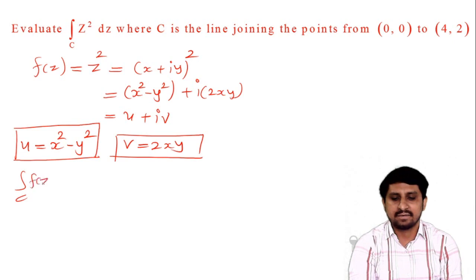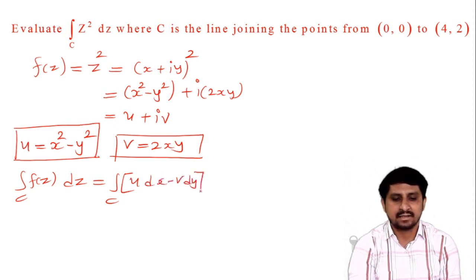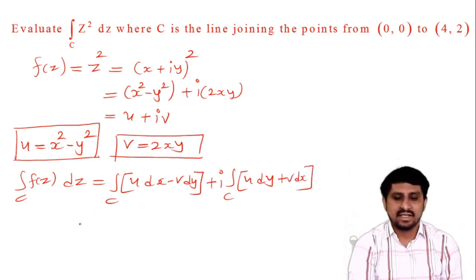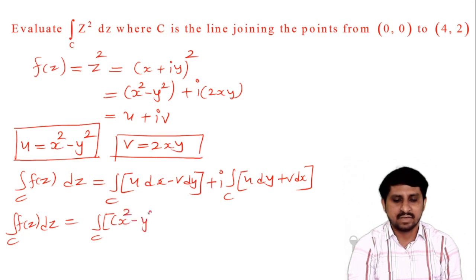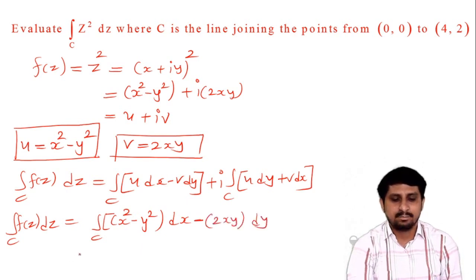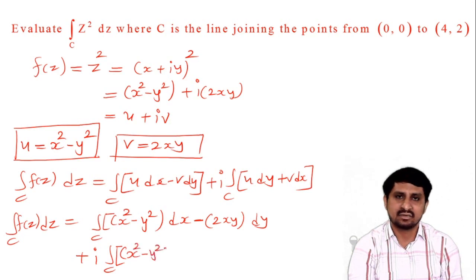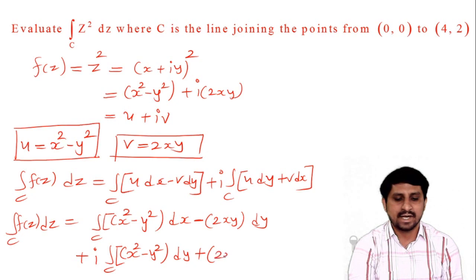Our main formula is: integration f(z) dz equals integration (u dx minus v dy) plus i times integration (u dy plus v dx). When we put u equal to x squared minus y squared and v equal to 2xy, we get: integration of (x squared minus y squared) dx minus 2xy dy, plus i times integration of (x squared minus y squared) dy plus 2xy dx. This is our main formula for this particular example.